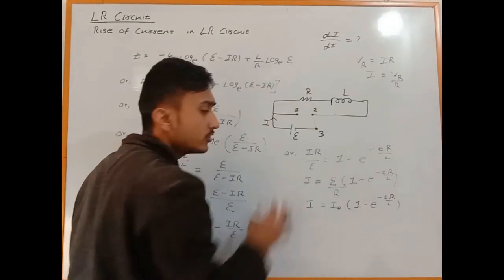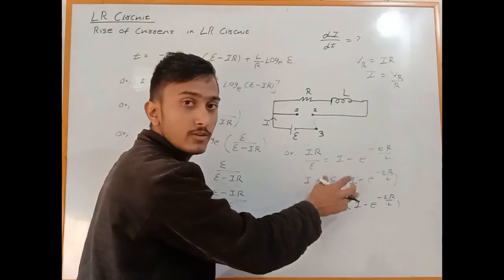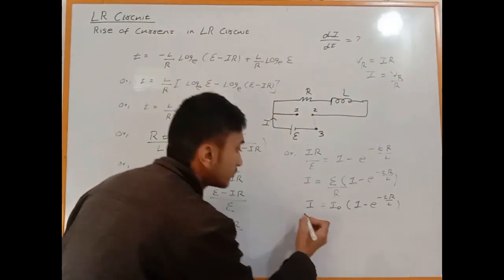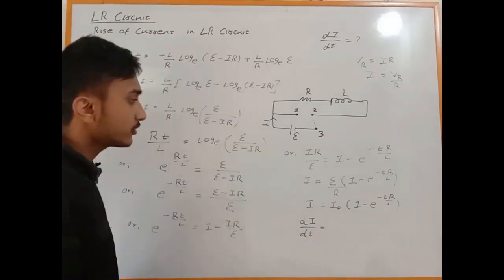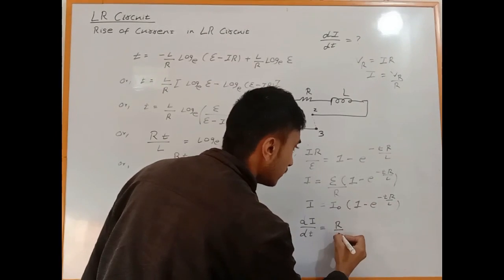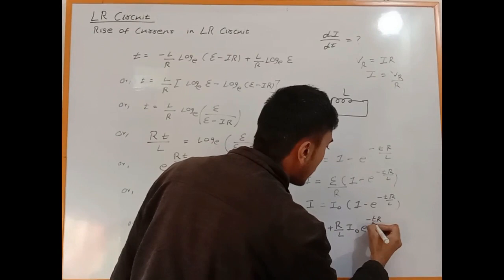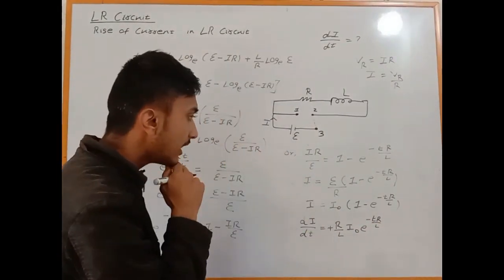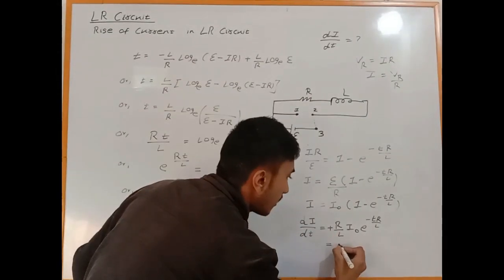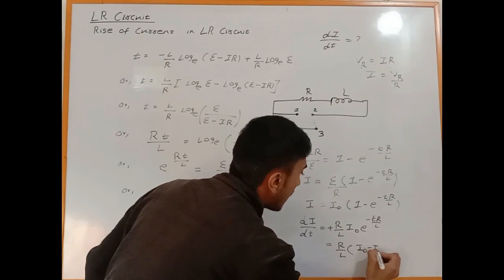Now let's find dI/dt, the rise of current. Taking the derivative: dI/dt equals I_not times the derivative of (1 minus e to the power minus TR/L). The constant I_not comes out, and we get dI/dt equals I_not times (R/L) times e to the power (minus TR/L).